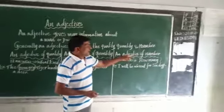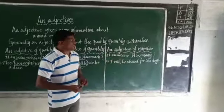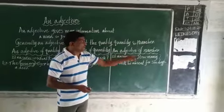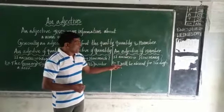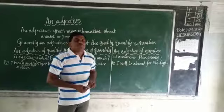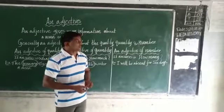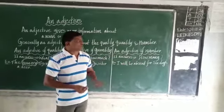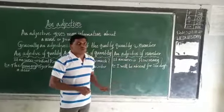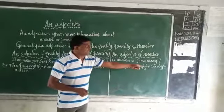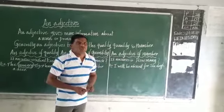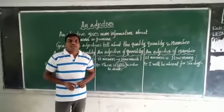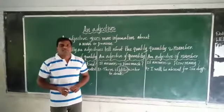An adjective of number. It answers 'how many'. For example, I have been absent for 6 days. So, the word '6' answers the question 'how many'. So, 6 is an adjective. In this way, we need to find adjectives in a sentence.